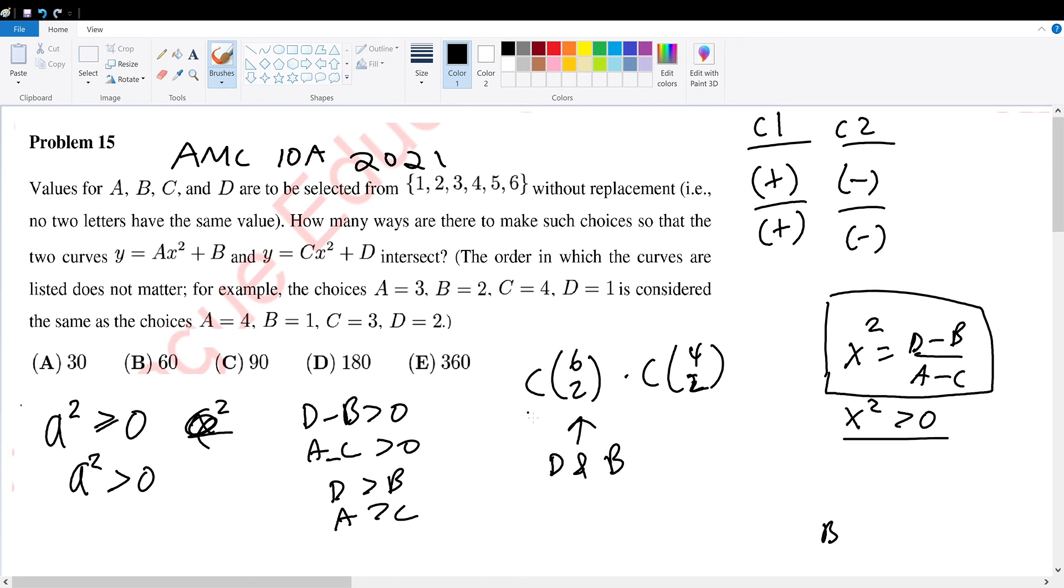If we select any two values from the set, it is guaranteed that one will be greater than the other, since there's no replacement. Now, whichever we choose that's the greater one we assign to d, and what's less we assign to b. Now, after we choose two values at random, we will have four values left, and of the four values, we want to choose two to assign for a and c. And whichever one is bigger, we give to a, and whichever one is smaller, we give to c.